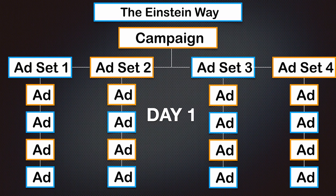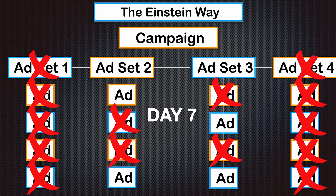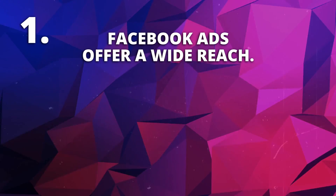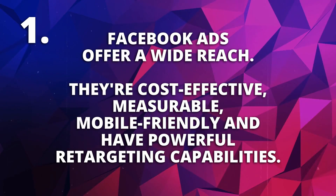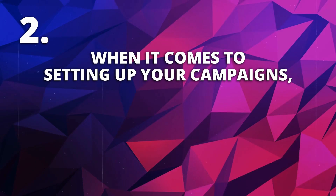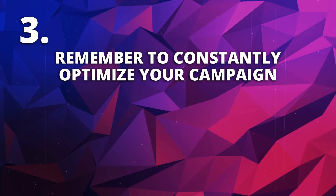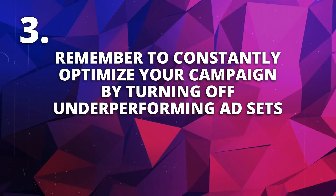So effectively, on day one your campaign looks one way, and by day seven you've got a couple of winning ad sets with ads that are doing really well — the money you're spending is now getting even better results. This is what we call starving the ponies and feeding the stallions. You now know how to optimize your Facebook ads. Let's recap the key points: Facebook ads offer wide reach, they're cost-effective, measurable, mobile-friendly, and have powerful retargeting capabilities. Test multiple audiences and ad sets as well as different ads to find winning combinations. Constantly optimize by turning off underperforming ad sets and scaling up your winners.